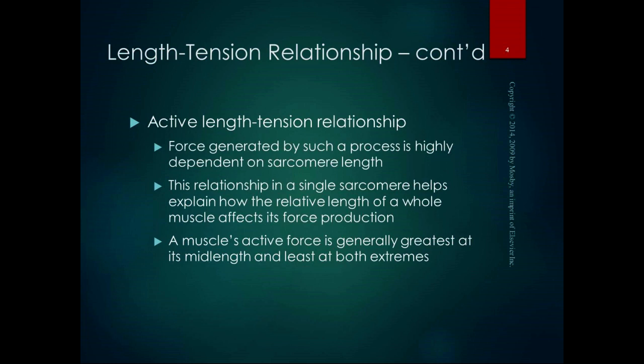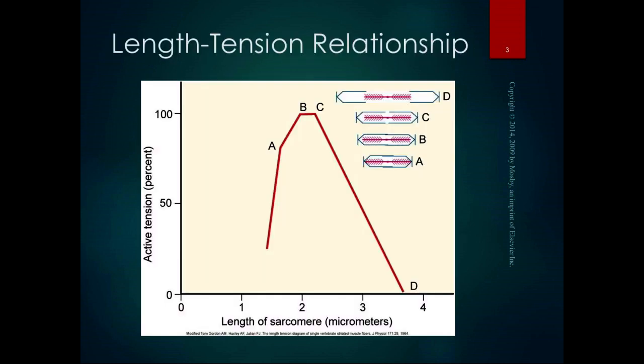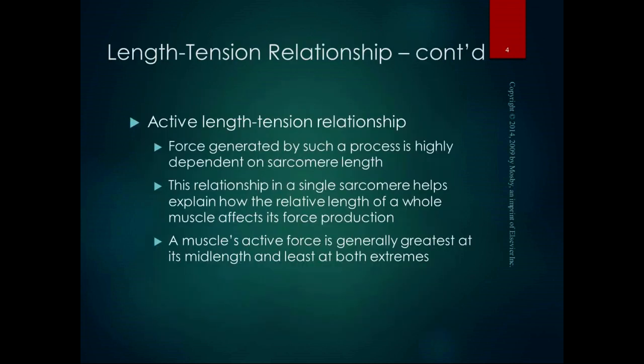If you think about that single sarcomere in the graph we just looked at, you can extrapolate that to the length of the whole muscle. The muscle's active force is generally greatest at its mid-length and the least at both extremes. When it's really stretched and when it's really shortened, that's when it's at its weakest, and when it's in the mid-range, that's when it's at its strongest.